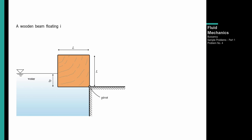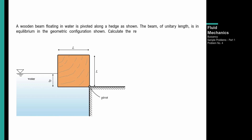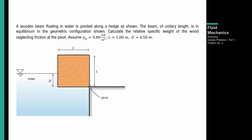Problem number 4: a wooden beam floating in water is pivoted along a hedge. The beam of unitary length is in equilibrium in the geometric configuration shown. Calculate the relative specific weight of the wood neglecting friction at the pivot. Assume unit weight ng water = 9.80 kN/m³, L = 1 meter, D = 0.50 meters. Yung forces na mag-a-act dun sa wooden beam — meron tayo yung weight, yung buoyant force, pati yung hydrostatic force, dahil isang side lang ng beam yung submerged.